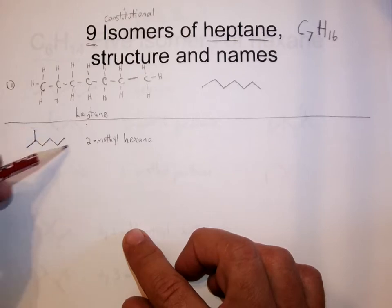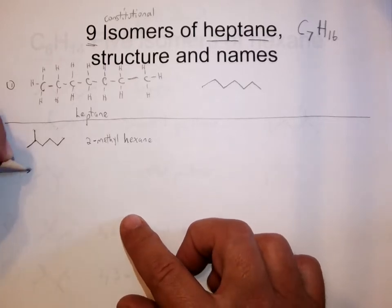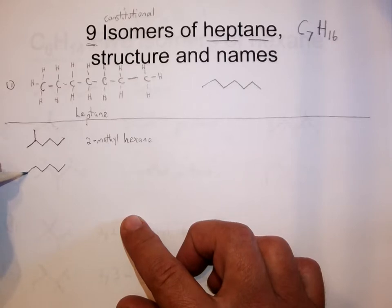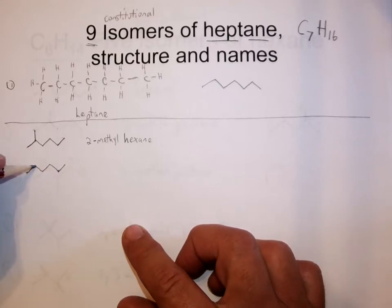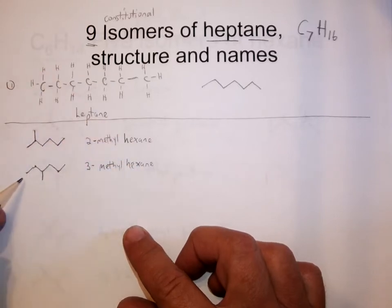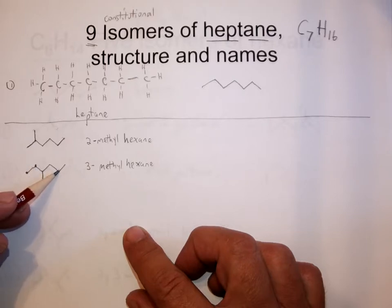If you want to see this more clearly, draw out the Lewis structure with all seven carbons and obey the octet rule to fill in the hydrogens — you'll see it's also C7H16. We can also have a hexane where we put the carbon branch in a different place. The second-to-the-end position would give us 2-methylhexane again, so we put it off the third carbon from the end instead, and we get 3-methylhexane as another isomer. So these are the only two hexane-based isomers of heptane.